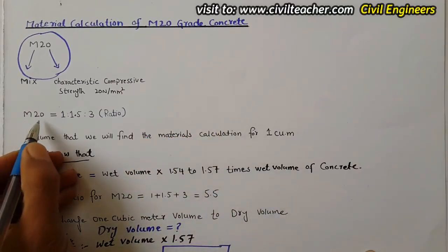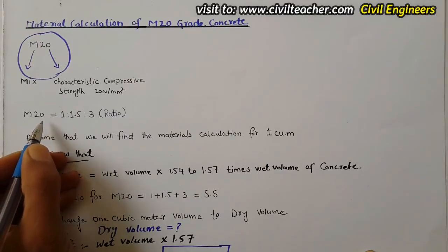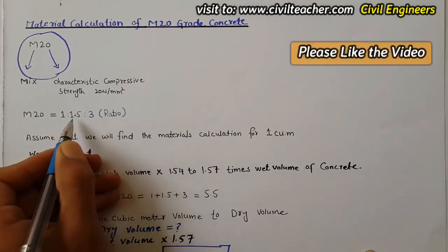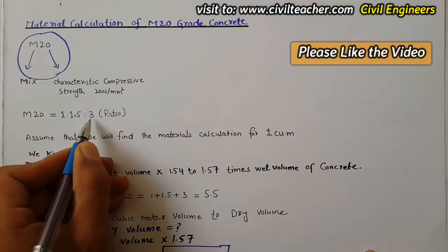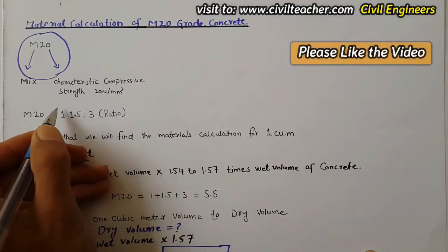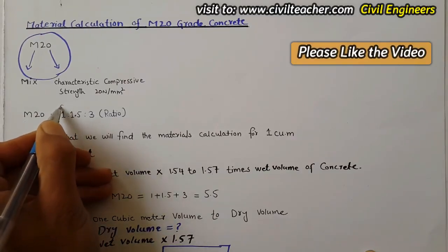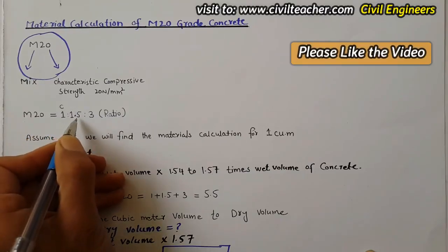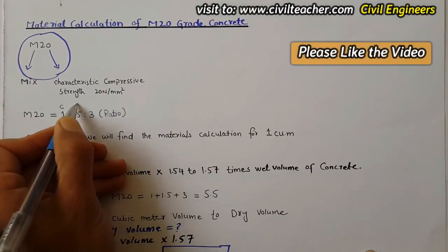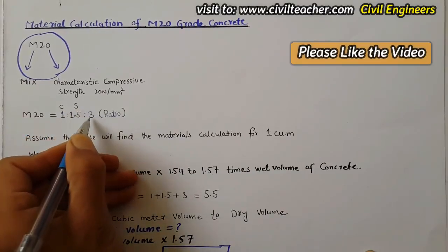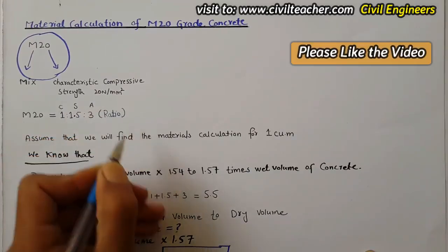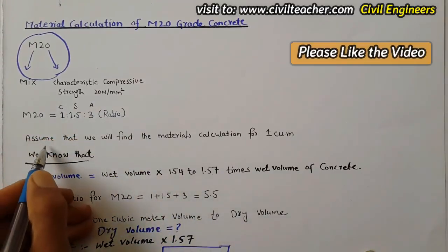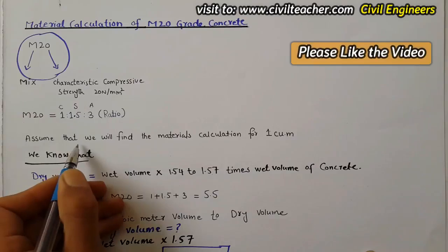M20 is the grade of concrete with a mix ratio of 1:1.5:3. Here 1 is cement, 1.5 is sand, and 3 is crush or aggregate. This is the mix ratio for M20 grade of concrete.